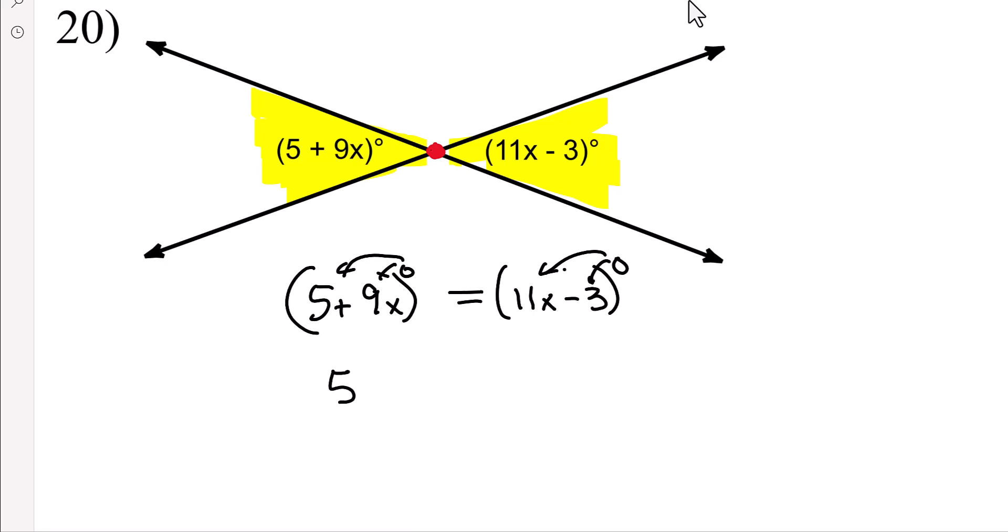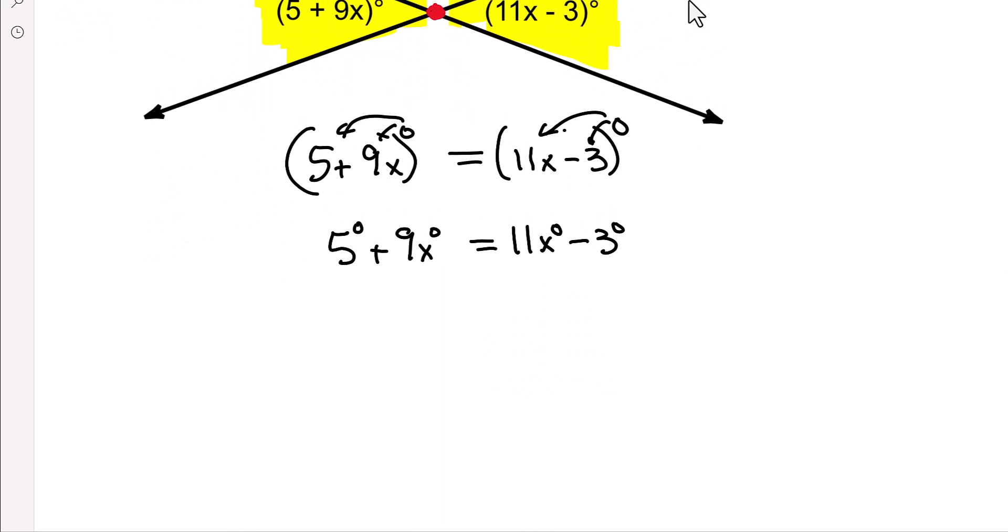So we're going to have 5 degrees plus 9x in degrees is equal to 11x in degrees subtract 3 degrees. My advice is, look at the variables first, whichever one is smaller, so 9 is smaller than 11. So I recommend subtracting, you can do it the other way, because then that way, the reason I recommend moving the smaller one is because most of the time when you do that, you will then end up with a positive variable. 11 subtract 9, 11x subtract 9x is 2x. And then, because we want the x on the right side, we're going to add 3 degrees to both sides.